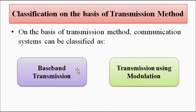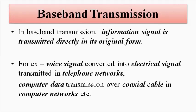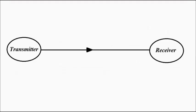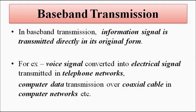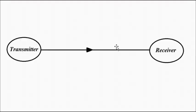What do these two transmission methods essentially mean? In baseband transmission, the information, the data, the signal is transmitted directly from the transmitter to the receiver without making any change in the signal characteristics — without altering anything, whether the amplitude, frequency, or phase. Nothing is changed; it is sent as it is. That is called baseband transmission.